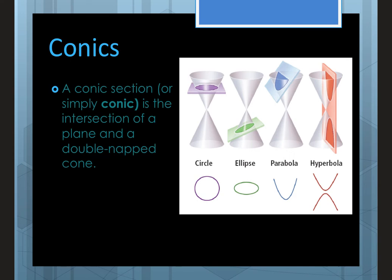Conics, or a conic section, is the intersection of a plane and a double-napped cone. These cones look almost like an hourglass. If you slide a plane through horizontally, it makes a circle; at a diagonal, it makes an ellipse; cutting off just a corner makes a parabola; and sliding it vertically through the double-napped cone makes a hyperbola.